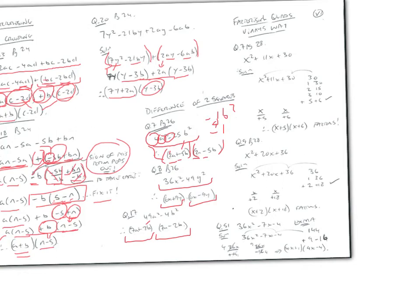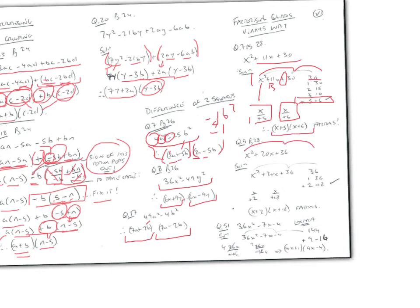Now let's look at factorising quadratics using Vinny's method. For x²+11x+30: the guide number is 1×30=30. Find factors of 30 that add to 11 — that's 5 and 6. Write x/+5 and x/+6, nothing cancels, so the factors are (x+5)(x+6). For x²+20x+36: guide number is 36, factors adding to 20 are 2 and 18, giving (x+2)(x+18).